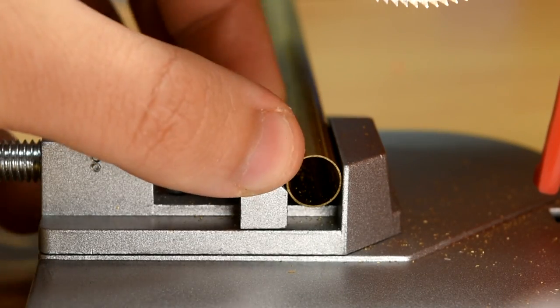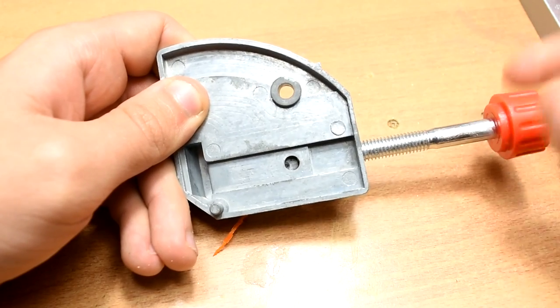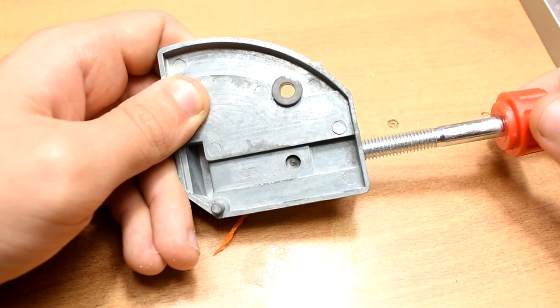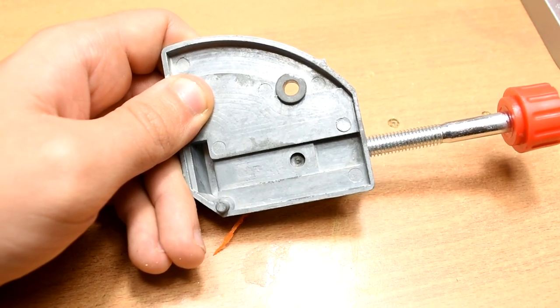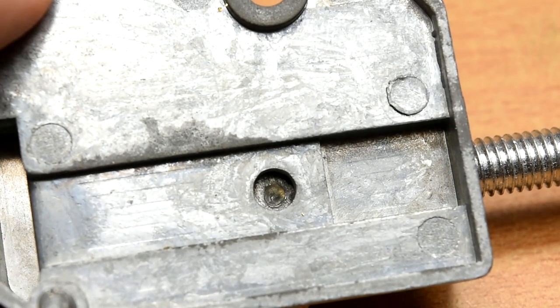The vise jaw itself also lifts up if you clamp certain things. Unfortunately, upgrading the vise would be difficult without replacing it entirely. I was hopeful when I saw this hole that it was held together with a grub screw, but the jaw is actually riveted in place and can't be easily modified.